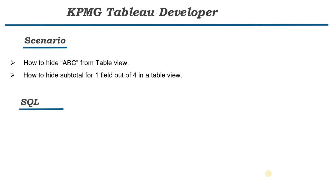Now let's discuss the SQL questions. The first question was basic yet very important: what's the difference between WHERE and HAVING? The difference is: we cannot use HAVING without GROUP BY, but we can use WHERE without GROUP BY. WHERE is used to filter rows before aggregation; if we want to filter using an aggregated value, we use HAVING. In terms of execution order, WHERE is applied before GROUP BY and HAVING is applied after GROUP BY.